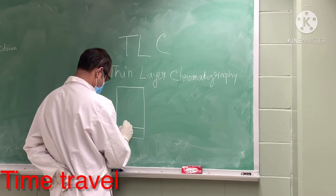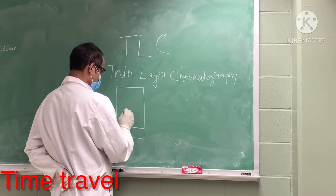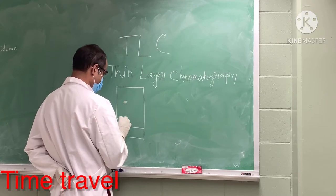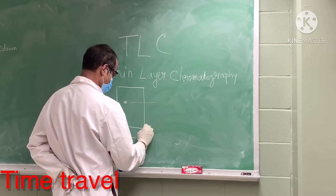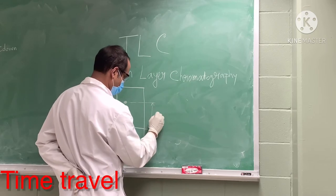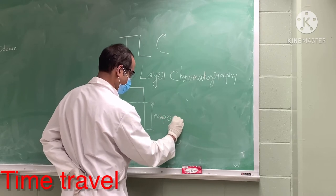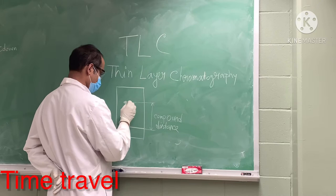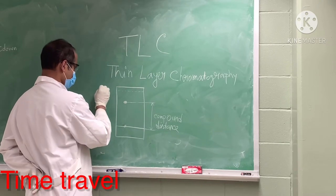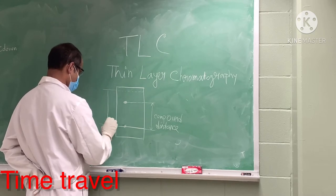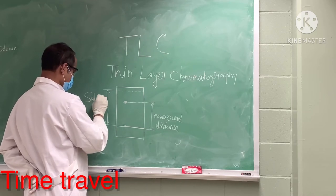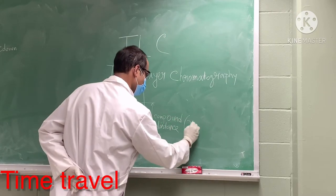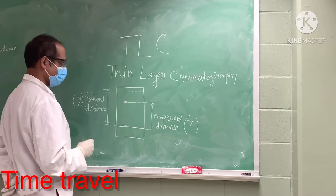TLC is a kind of plate. On top of the plate there is a very thin layer of silica. We put the compound on the plate and run a solvent through it. As the solvent goes up, depending on the polarity of the compound and the solvent, the compound moves a certain distance — we call this X. The distance the solvent travels is called the solvent distance, named Y.